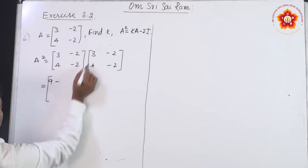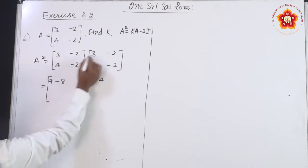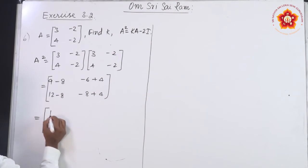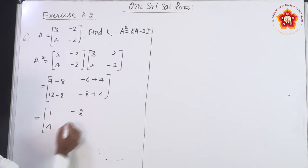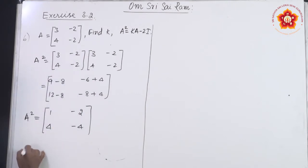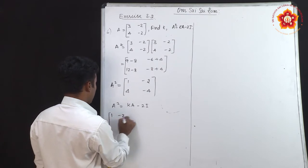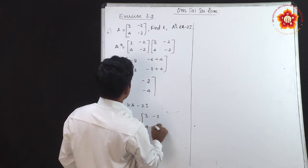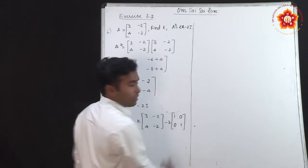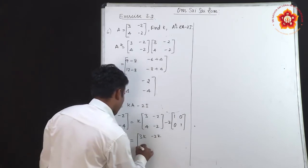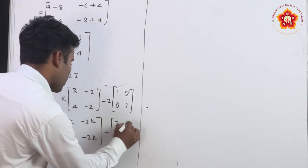A² = A × A = [3,-2; 4,-2] × [3,-2; 4,-2]. Computing: 3×3 + (-2)×4 = 9-8 = 1; 3×(-2)+(-2)×(-2) = -6+4 = -2; 4×3+(-2)×4 = 12-8 = 4; 4×(-2)+(-2)×(-2) = -8+4 = -4. So A² = [1,-2; 4,-4].